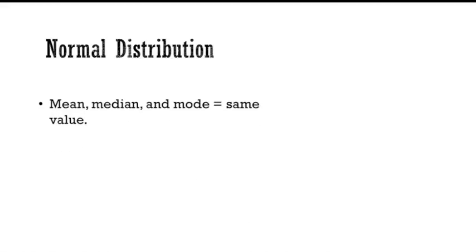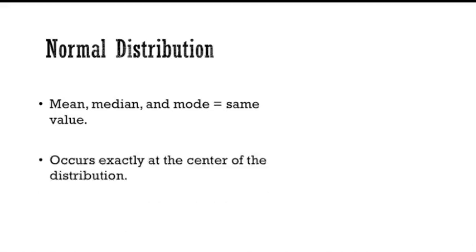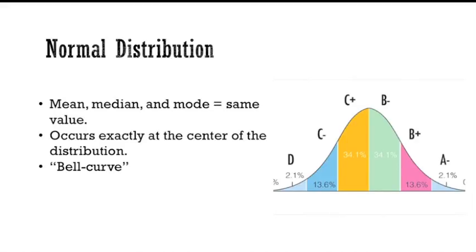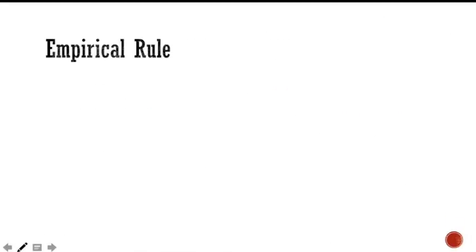In a normal distribution, the mean, median, and mode all have the same value and occur exactly at the center of the distribution. This causes a bell-shaped curve when graphed, otherwise known as a normal curve.